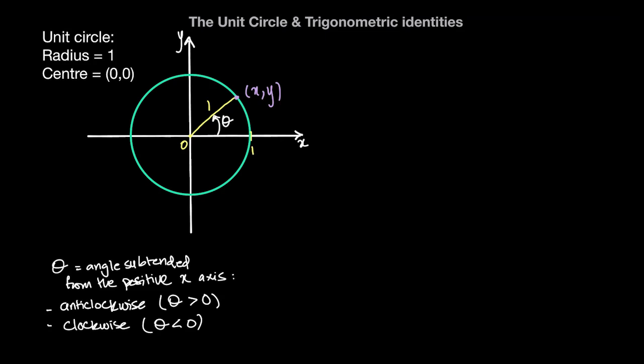Well, we can say for the unit circle, or for any circle rather, that the ratio between the x coordinate and the radius can be expressed as cosine of theta. And since the radius is just 1, we can simply say that the x coordinate is the cosine of theta.